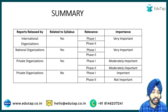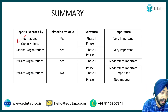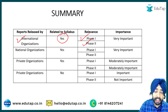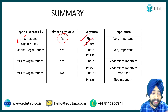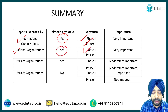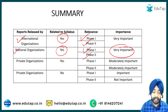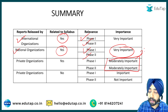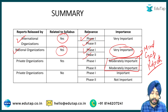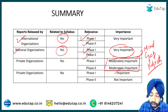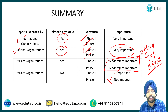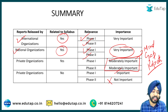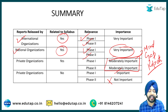To summarize how to prepare your reports list: if a report is released by an international organization and is related to your syllabus, it will be very important for both Phase 1 and Phase 2. Similarly, for national organizations, if the report is related to your syllabus, it will be very important for both phases. For private organizations — if related to the syllabus, it can be moderately important; for example, the Mind the Gap report released by Oxfam had a question asked in 2020. However, if a private organization report is not related to your syllabus — such as Forbes rankings or the Hurun Index — it is only important from a general awareness perspective for Phase 1, and will not be relevant for your ESI and ARD-specific sections.